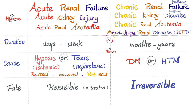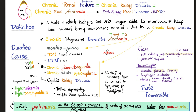Causes of acute renal failure, as discussed before, are either hypoxic or toxic — ischemic or nephrotoxic. Chronic renal failure could be diabetes or hypertension — number one and number two most common causes. Acute renal failure is reversible; chronic is irreversible. Causes include diabetes, hypertension, chronic glomerulonephritis, chronic pyelonephritis, cystic kidney disease, hyperuricemia, hyperparathyroidism, and others.